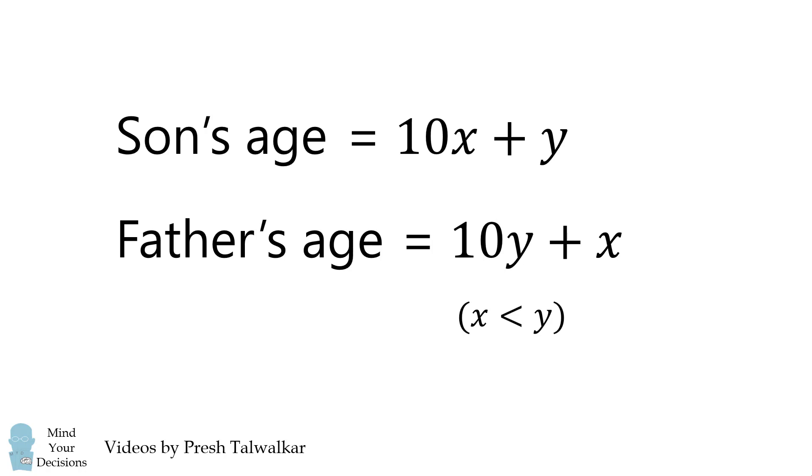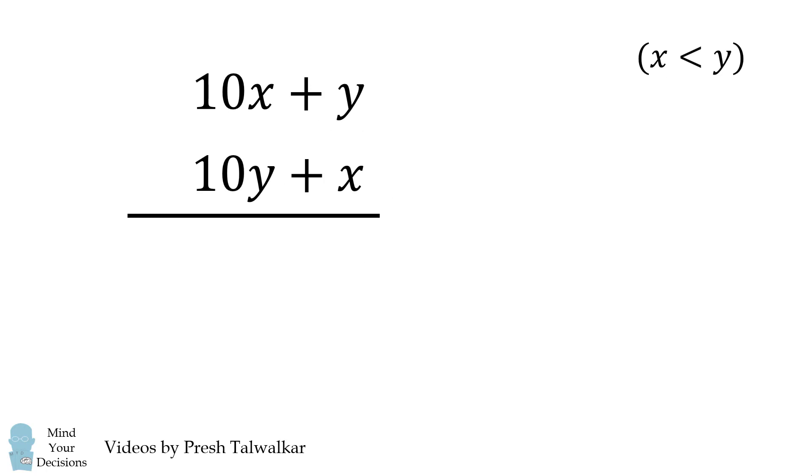We want x to be less than y, because the father is older than the son. Now, we add up the ages, and we get a result of 11x plus 11y.